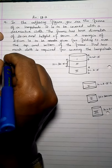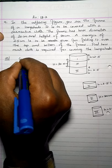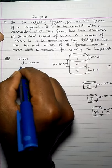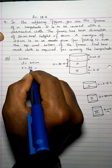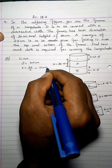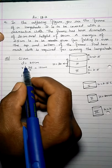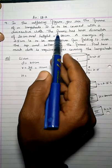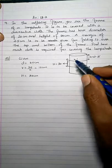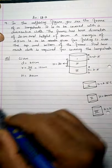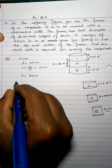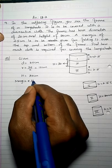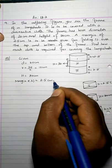Given data: diameter D = 20 centimeters, so radius R = 20/2 = 10 centimeters. The height of the frame (capital H) = 30 centimeters. The margin height (small h) = 2.5 centimeters.